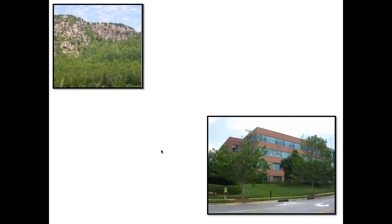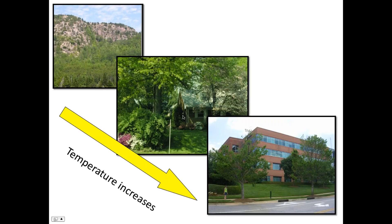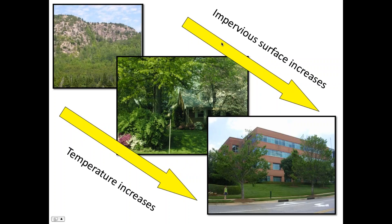Other things happen as you change from natural areas to urban areas. One of the big ones is that temperature increases. Folks have known for hundreds of years that it's hotter in the city than in the countryside — which is why people used to have country houses they'd go to in the summer. Temperature increases primarily because the amount of impervious surface increases. Impervious surfaces include roads, blacktop, sidewalks, rooftops, and buildings — all surfaces that absorb radiation from the sun and release it as heat, creating what we call the urban heat island effect.